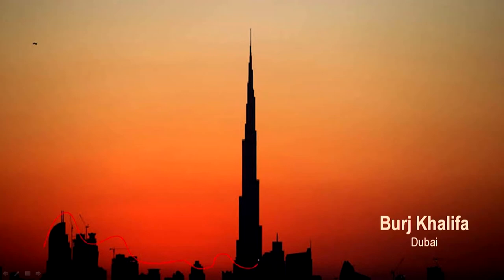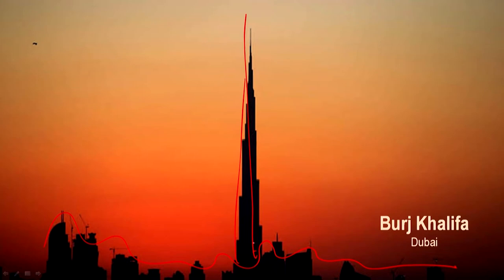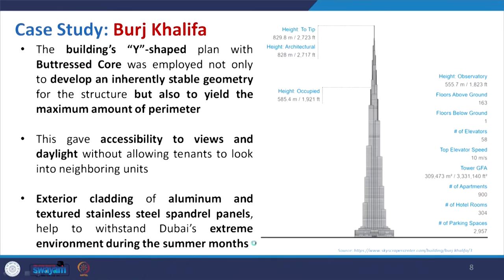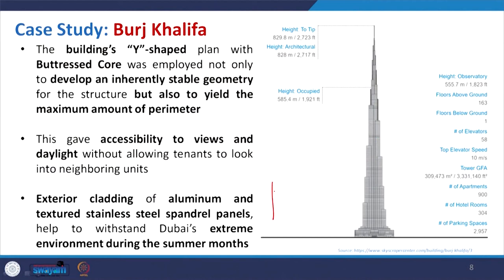Coming to the next example — Burj Khalifa in Dubai. The concept is taken partly from the bundle tube structure where multiple tubes come together and the cross section changes at the top. However, it is not exactly a bundle tube — a modified structure is used, and a Y-shaped building plan is formed with a hexagonal core at the middle. This is referred to as the buttressed core.